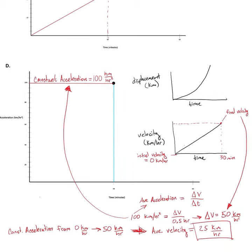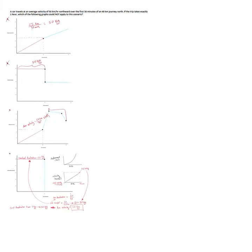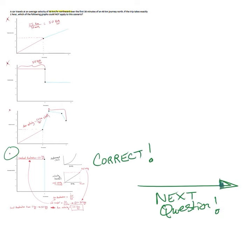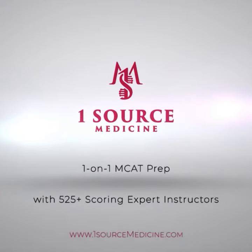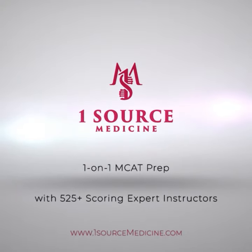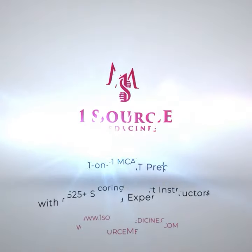Regardless of whether you calculate this average velocity, you can determine that answer choice D is for sure the correct answer, because all we're looking for is something that's inconsistent with this scenario in which we travel at an average velocity of 50 kilometers per hour over the first half hour of a 40 kilometer journey. So we can go ahead and pick answer choice D with a high degree of confidence and move on to the next question, covered in another video, which you can find alongside more clear, concise explanations to MCAT passages, questions, and challenging concepts by visiting our social media pages or checking us out at www.onesourcemedicine.com. Thanks so much for watching.